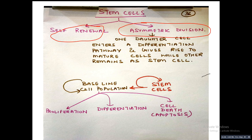Self-renewal means that one stem cell will divide into two stem cells — the product of division gives rise to two stem cells. Asymmetric division means that one daughter cell will enter a differentiation pathway and give rise to a mature cell, while the other remains as a stem cell — meaning one daughter cell retains stem cell characteristics while the other enters a differentiation pathway.